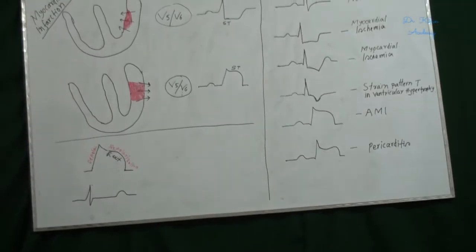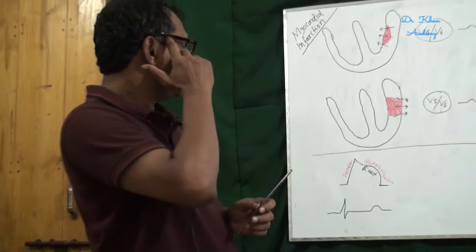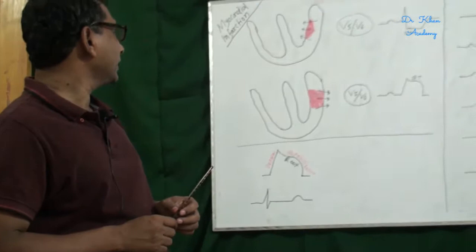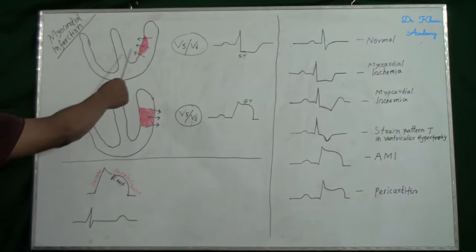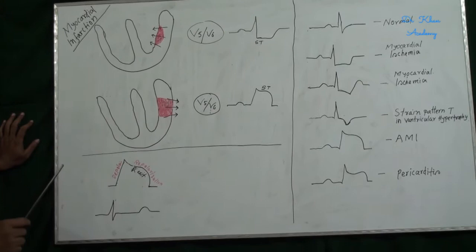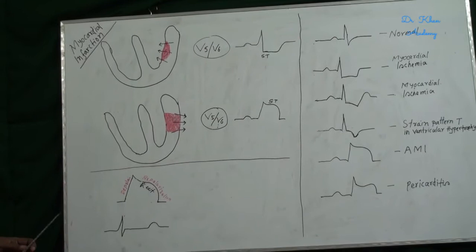Welcome to ECG class number three. Today I am going to discuss myocardial infarction. When hub thickness infarction occurs, that is sub-endocardial injury, the intracellular potassium comes out. So when potassium exits, repolarization occurs.